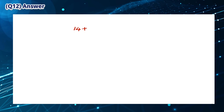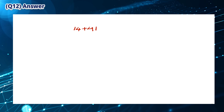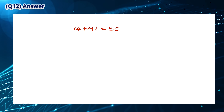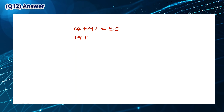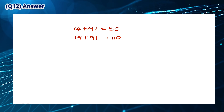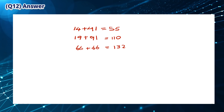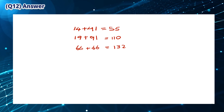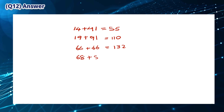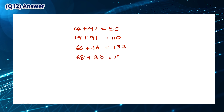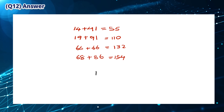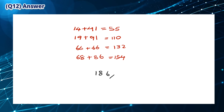We can find the answer to this question by testing out the different answers. We can make 55 by adding 14 and 41, make 110 by adding 19 and 91, make 132 by adding 66 and 66, and make 154 by adding 68 and 86. The only answer that we can't make is 186, which means that the answer is E.